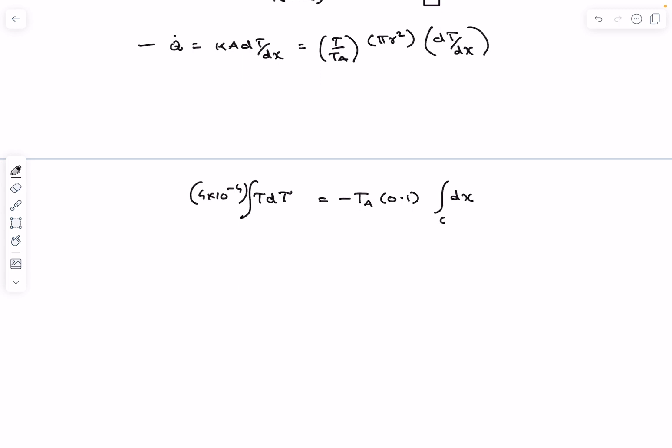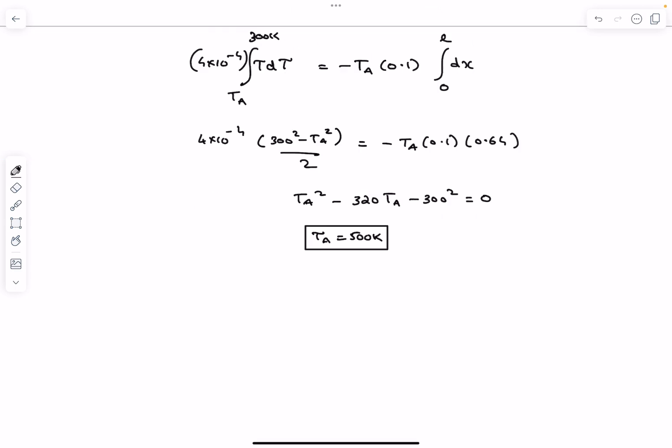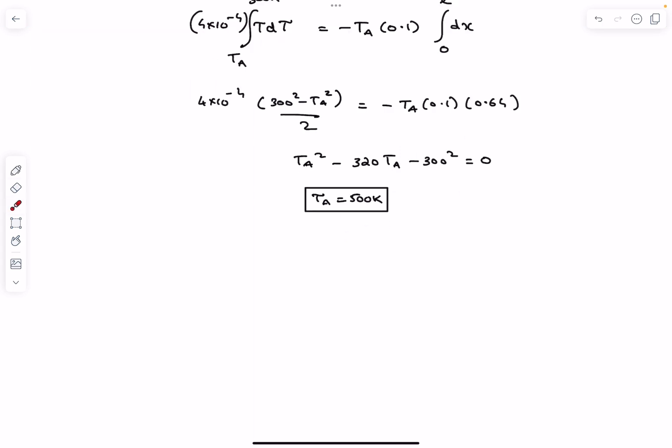Now after separating, so at x equal to 0 which corresponds to the surface A, the temperature is Ta, and at x equal to L, the temperature is 300 Kelvin. And after solving the quadratic, we obtain the temperature at the surface A as 500 Kelvin, which is the required answer.